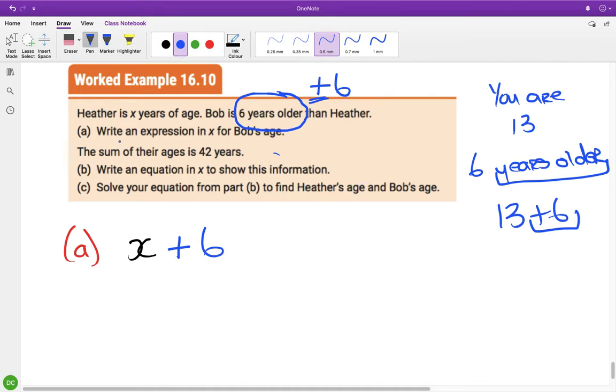The sum, here's language again. Now, we did talk about this during the year. Sum is add. The sum of their ages is 42. So, let's write it. So we have Heather's age plus Bob's age equals 42. Agree? That's what it says. The sum of their ages. And I told you sum means add. So if you add Heather's age and Bob's age, you get 42.